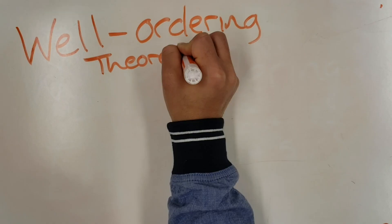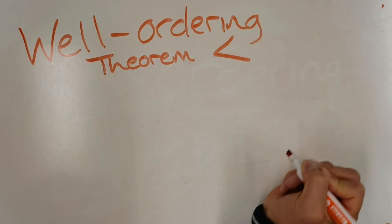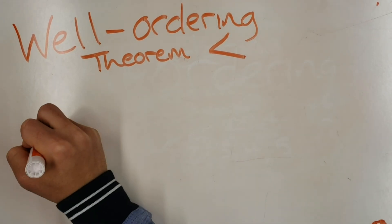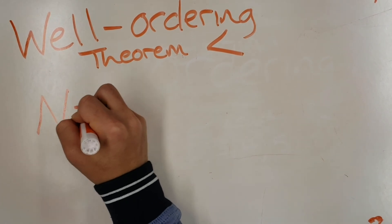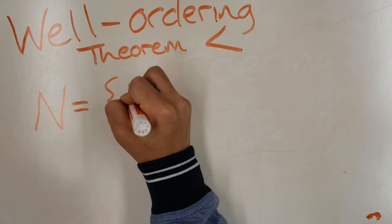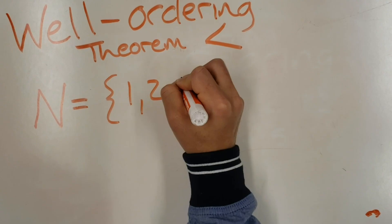For a set to have a well-ordering, it must have some sort of way of comparing the objects that yields a smallest element. For example, the set of all natural numbers N is well-ordered because 1 is obviously the least element.